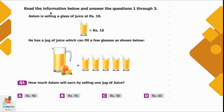Read the information below and answer questions 1 through 3. Aslam is selling a glass of juice at rupees 10. He has a jug of juice which can fill a few glasses as shown below.